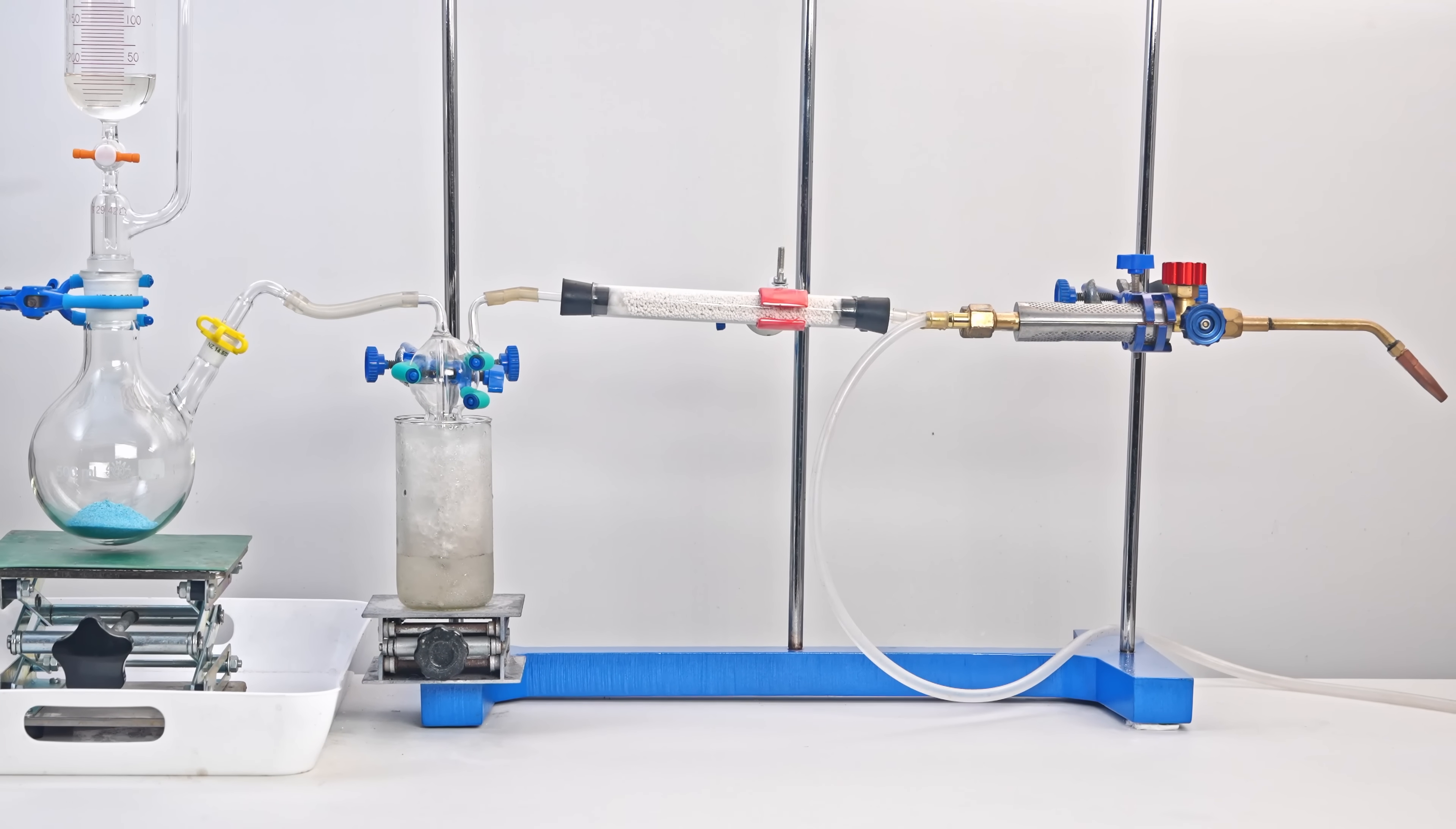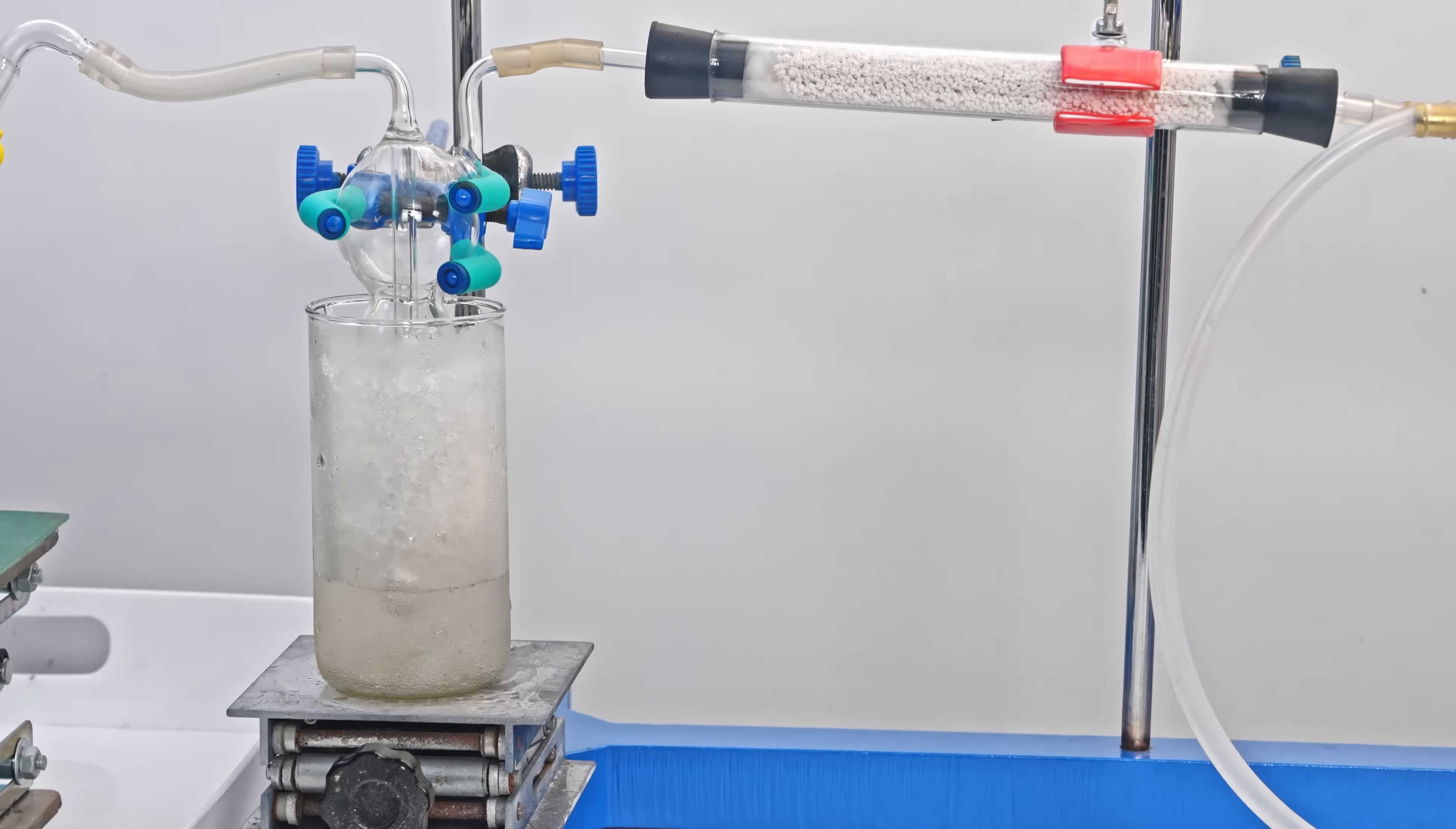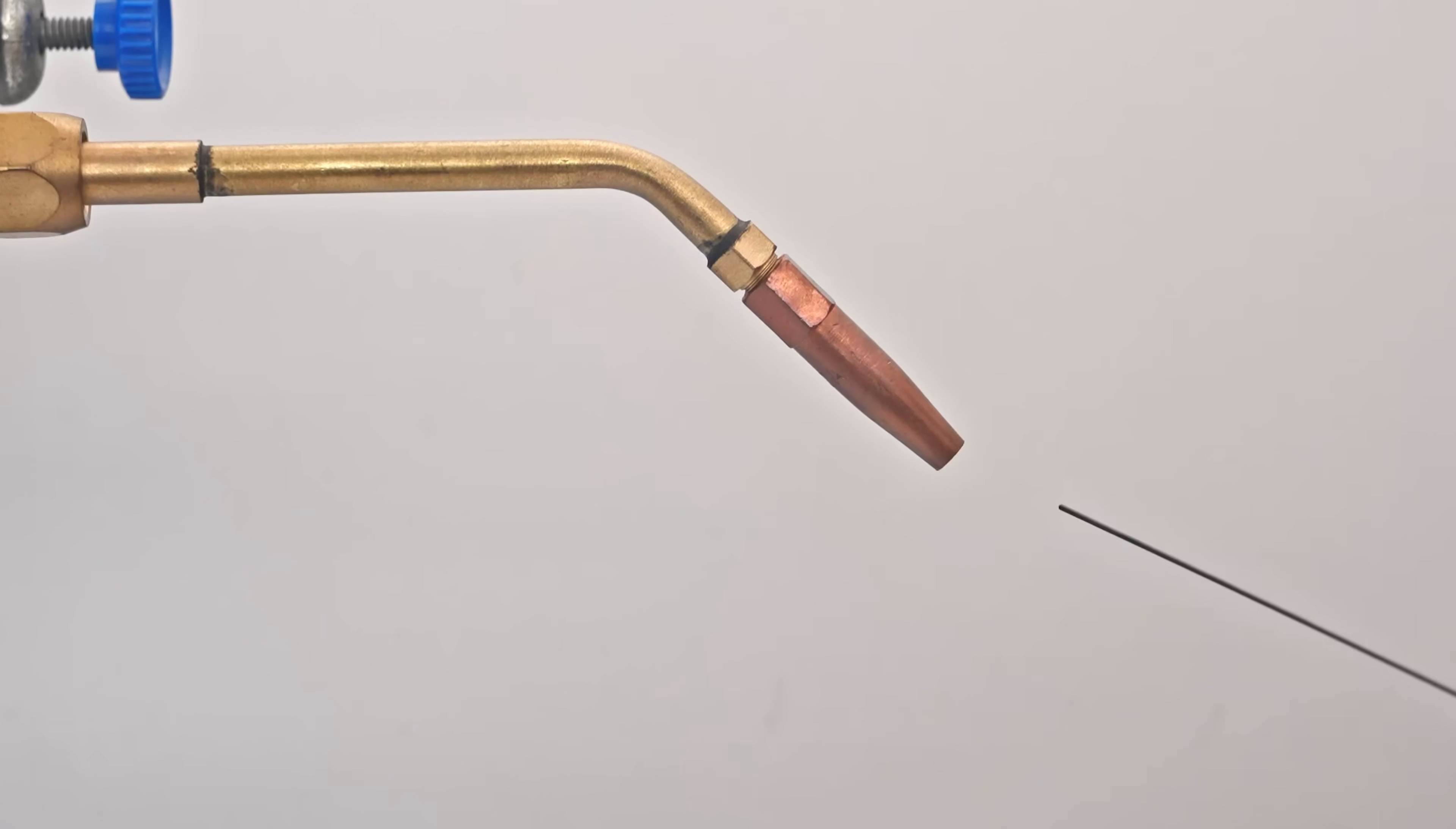To obtain more cyanogen, I'll use a different reaction. This will be the interaction of copper sulfate pentahydrate with a concentrated solution of potassium cyanide. In this reaction, the released cyanogen will pass through drying tubes and then combine with oxygen in an autogenous heating torch. After I get stable combustion of the cyanogen oxygen mixture, I'll bring a tungsten electrode to the flame, and we'll see if it can be melted.